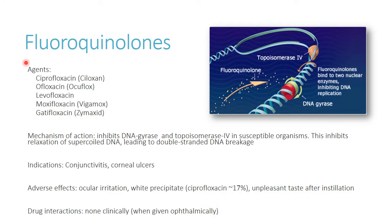Now we have fluoroquinolones — ciprofloxacin, ofloxacin, levofloxacin, and moxifloxacin. Moxifloxacin (Vigamox) is probably the most common one used. These work by inhibiting topoisomerase and DNA gyrase, damaging bacterial DNA. They're more specifically used for things like corneal ulcers and importantly have activity against Pseudomonas. So if a patient comes in with suspected bacterial conjunctivitis and a history of contact lens wear, a fluoroquinolone like moxifloxacin is what you should reach for.